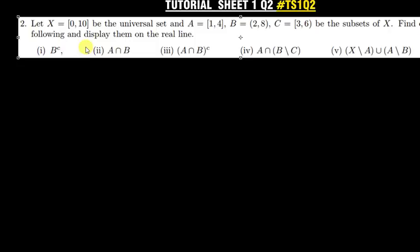Hello everyone, I'm back again with another tutorial. This time we're solving question two in tutorial sheet one. The question reads: let X be equal to the closed brackets zero comma ten — closed brackets — and when you see the other kinds of brackets, those are called open brackets. So we're talking about set intervals. Given questions A, B, C are subsets of X. Find each of the following and display them on the real line.